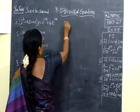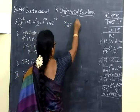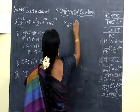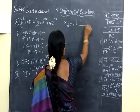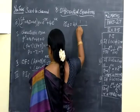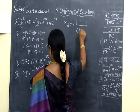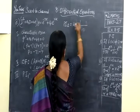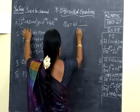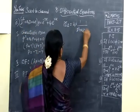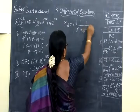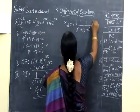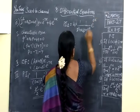Next is PI2. PI2 = 1/(D + 7)² acting on 4e^(0x). Substitute into P² + 14P + 49, where f(0) is not zero. This equals 4/(0² + 14(0) + 49) times e^(0x).